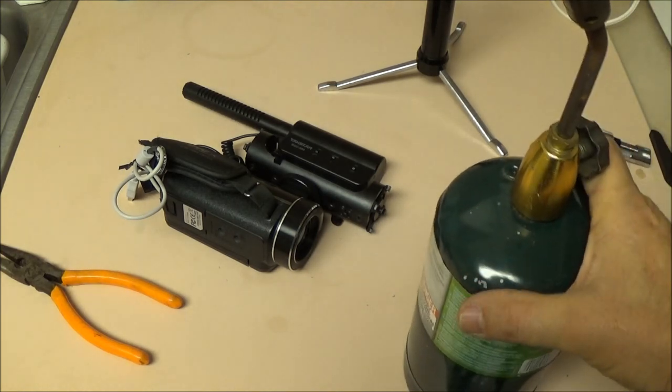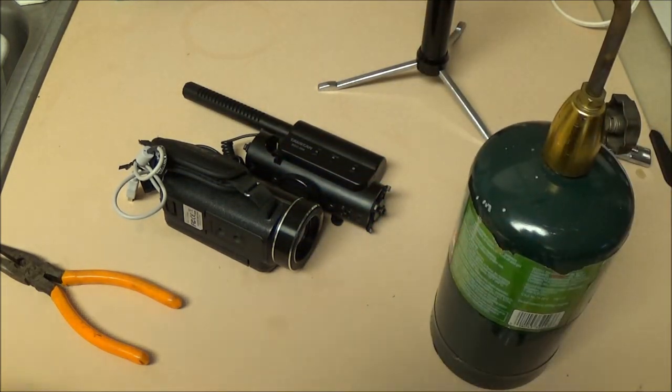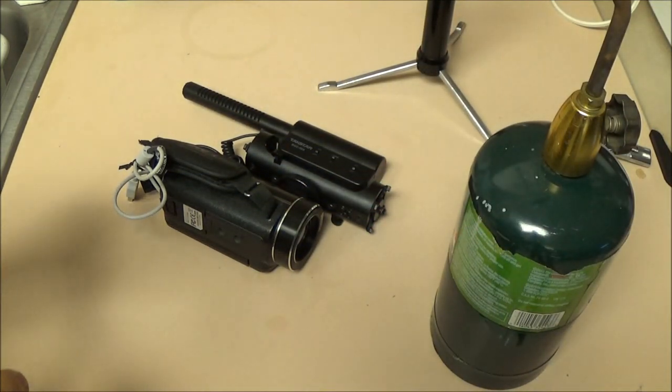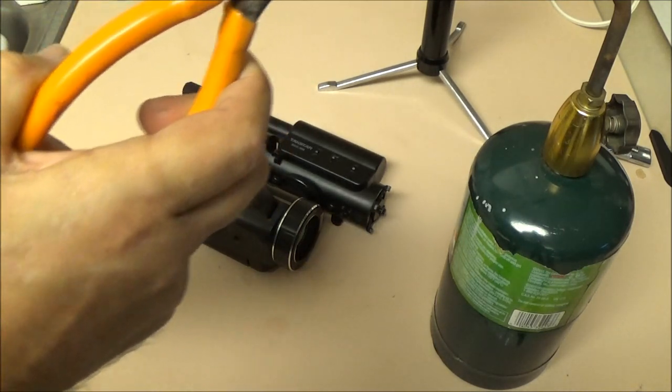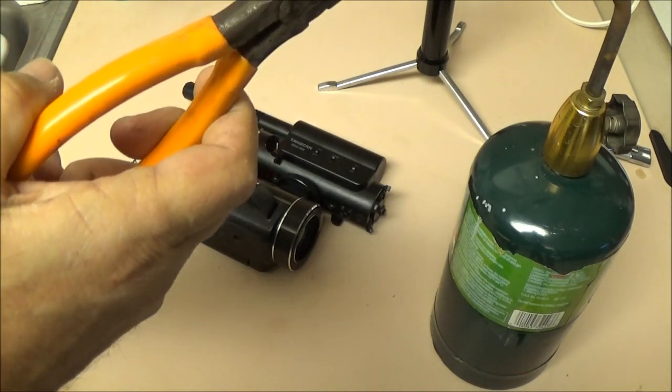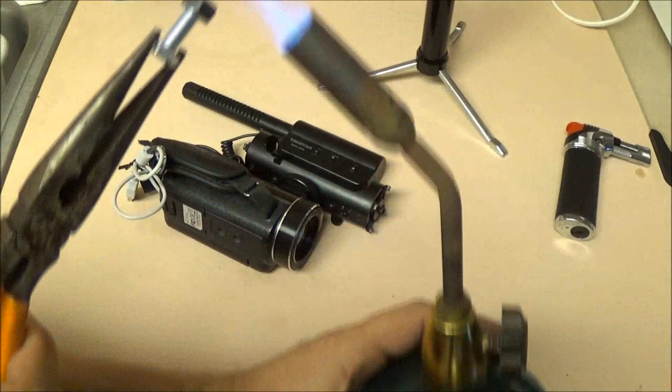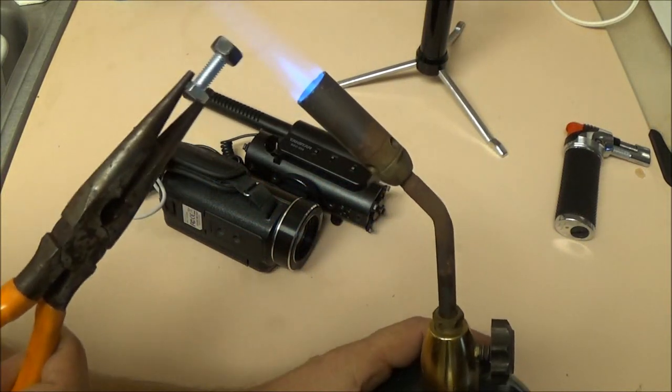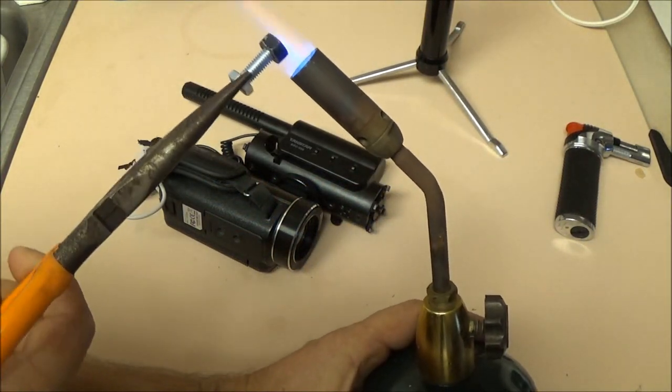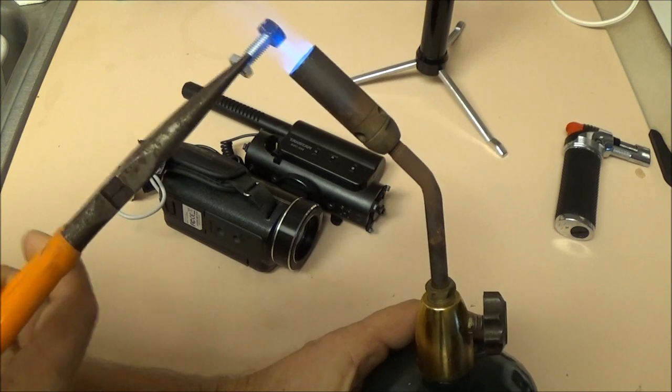Alright, so we've got the big torch here. Now you don't want to get this thing red hot because it'll melt all the way down through there and screw a bunch of stuff up. So what I'm going to do is heat this up just enough to where it's going to melt some plastic. Okay.